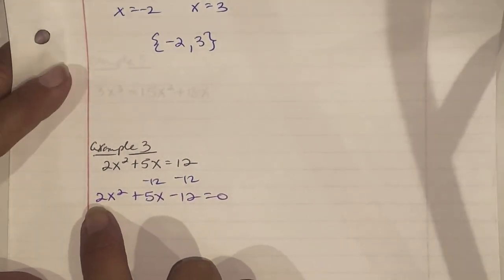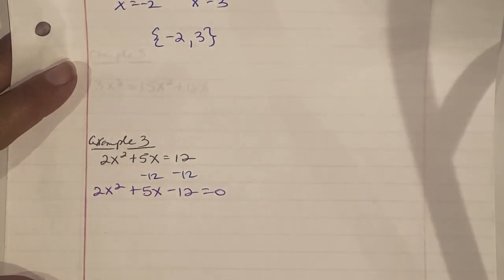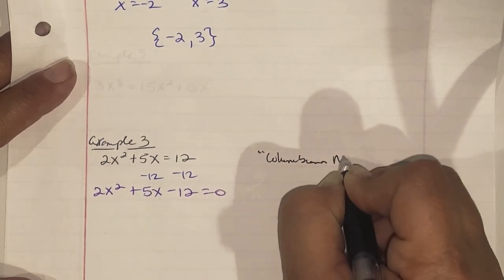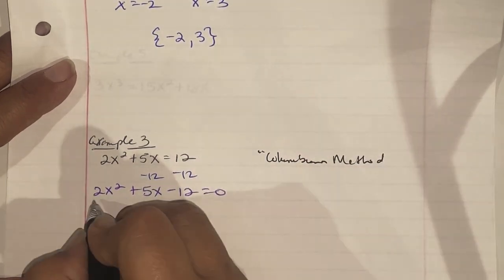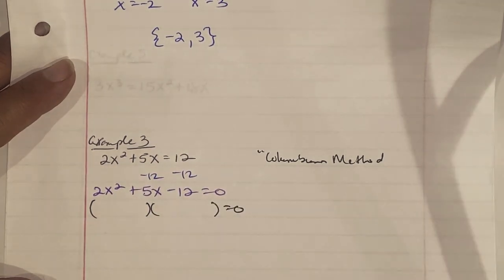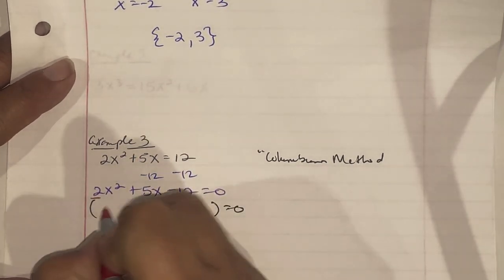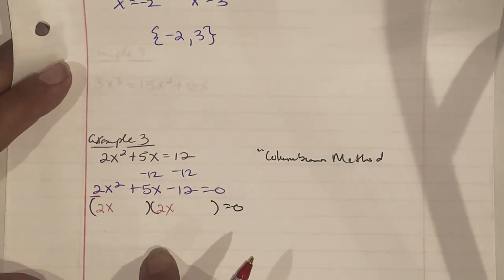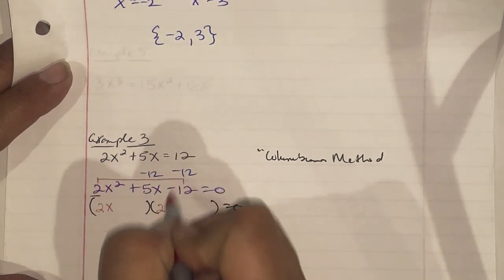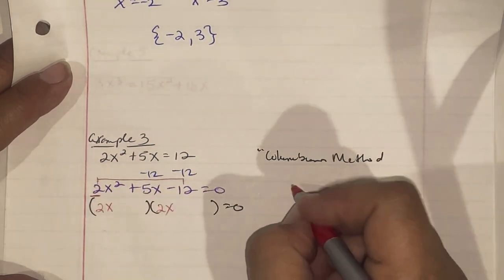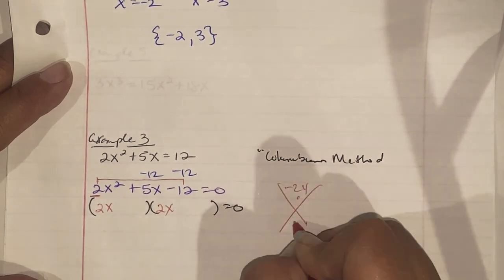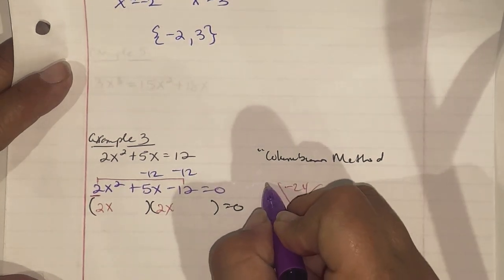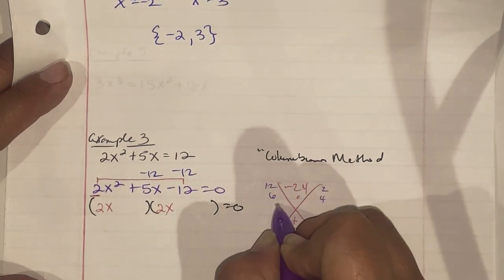The leading coefficient is not 1, so we're going to use the Colombian method from a previous lesson. We put the leading coefficient with the variable in the first position of both factors. Then we multiply the first number by the third number: 2 times negative 12 is negative 24, and we need two numbers that add to the middle number, 5.